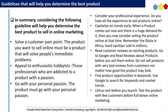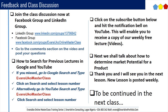Remember the Ebola outbreak in Africa — hand sanitizer sold in millions. Read customer reviews on existing products: go to Google and read reviews about products before you sell them online. Do not sell products with very bad customer reviews, no matter how good the product may look. Find product opportunities in keywords — use Google to search for keywords and market trends. Litmus test before you launch — test the product with a few customers before full-blown online marketing.